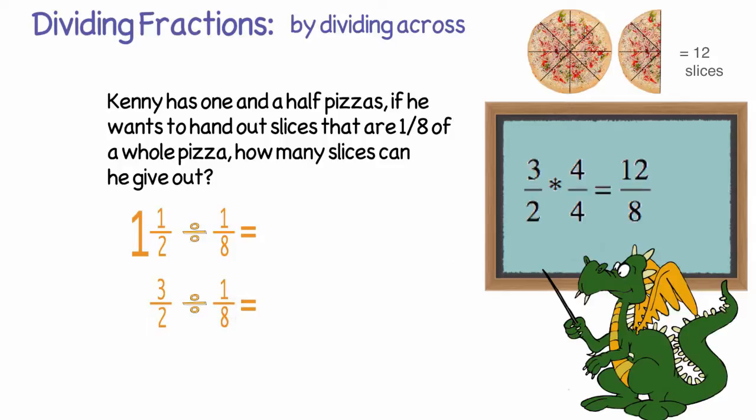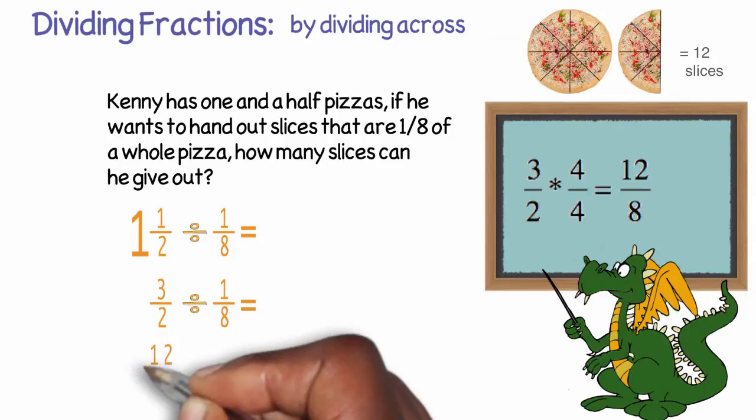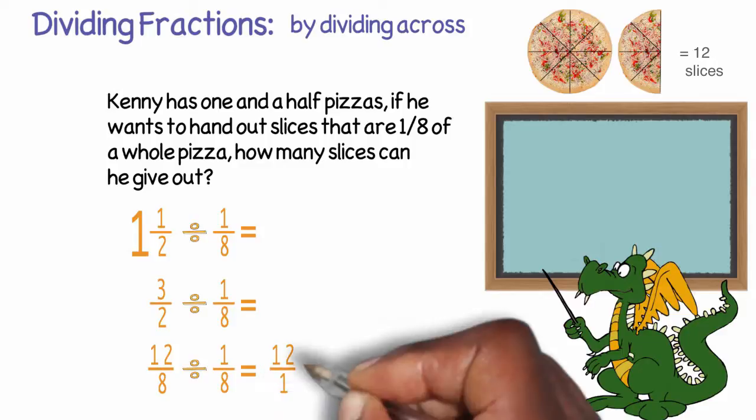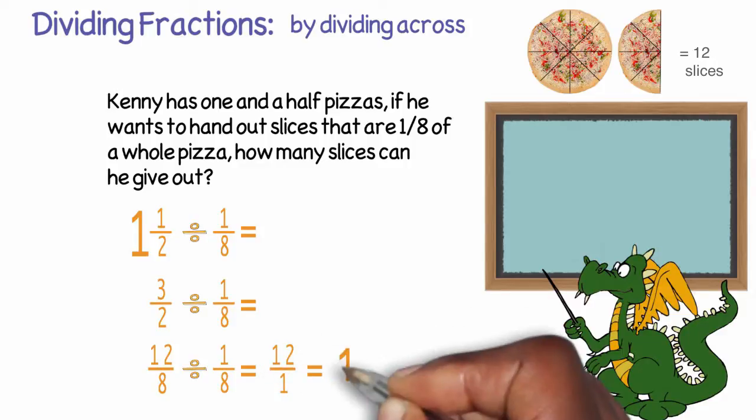Next, we need to get a common denominator for both fractions. So the problem becomes twelve eighths divided by one eighth. Now I can divide straight across. Twelve divided by one is twelve and eight divided by eight is one. So the final answer is indeed twelve.